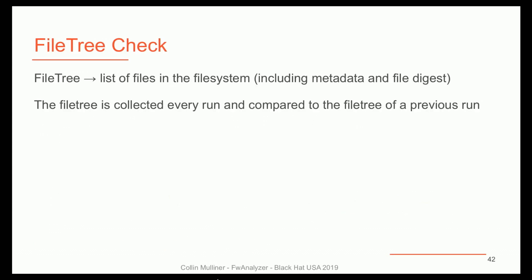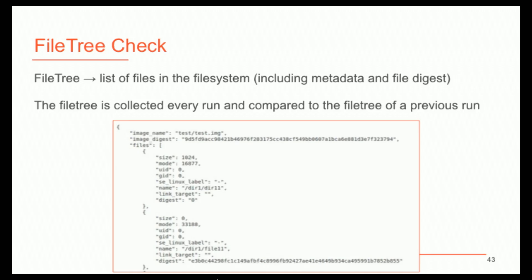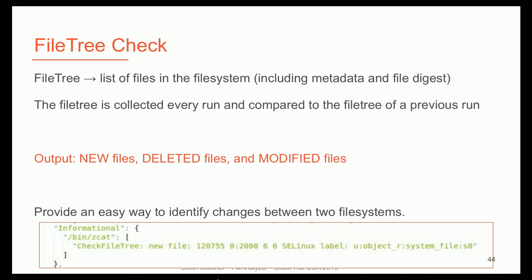Every time this tool runs, we generate something we call a file tree, which is basically a giant list of all files with all permissions, owners — it has every little detail about your file system. The nice thing is when you get a new firmware version or new revision, you can just compare those two files and say: hey, there are some new files, or some files were deleted, or files changed permissions. It's a very easy way to keep track of changes over time.